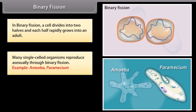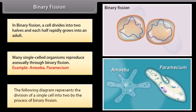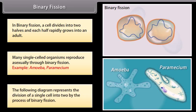Examples include Amoeba and Paramecium. The following diagram represents the division of a single cell into two by the process of binary fission.